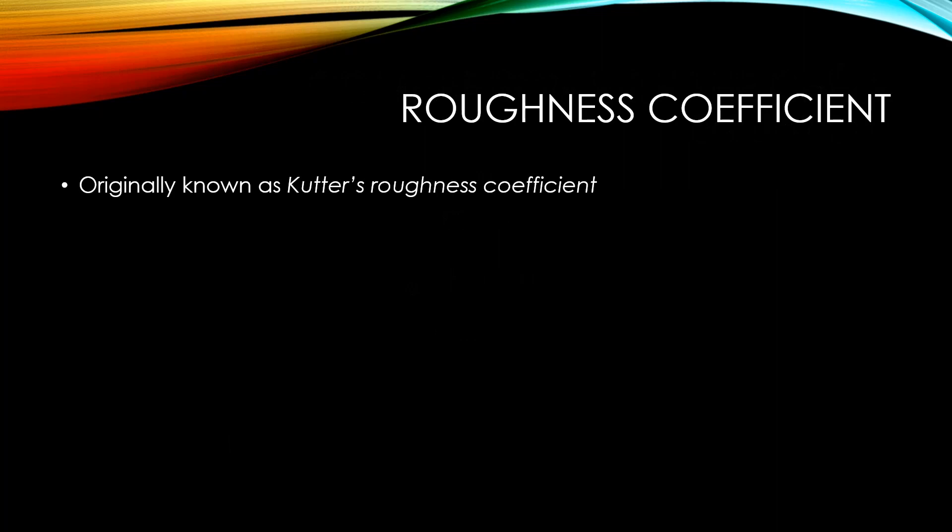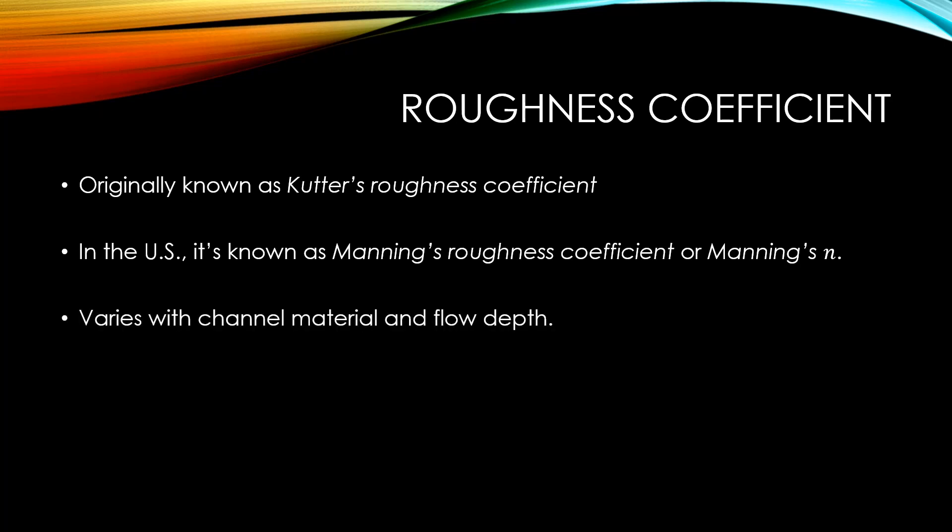The roughness coefficient, also known as n, used to be called Kutter's roughness coefficient. However, in the United States, it is known as Manning's roughness coefficient, or Manning's n. In fact, in my years working as a water resources engineer, I've never heard the name Kutter. It's always been called Manning's n. This roughness coefficient varies with channel material and flow depth. But in engineering design, typically only channel material is considered. This roughness coefficient is found empirically, therefore laboratory and field measurements are vital for determining the n coefficient.